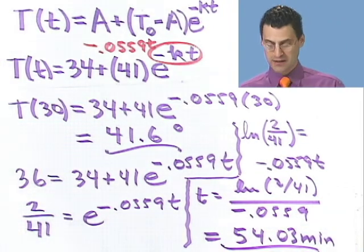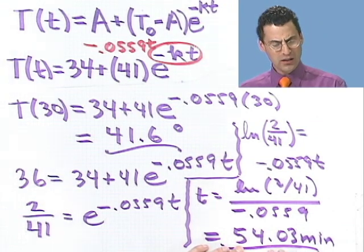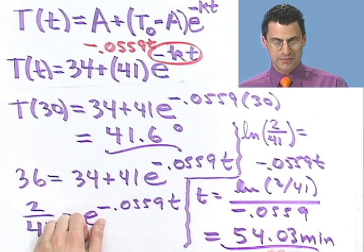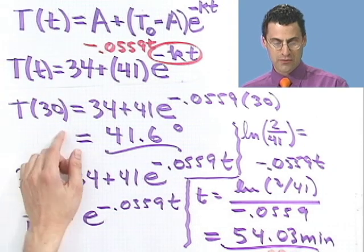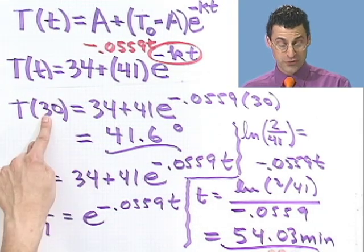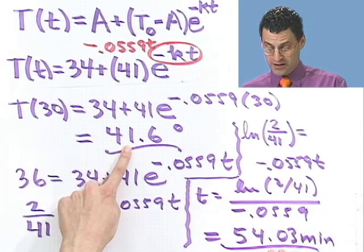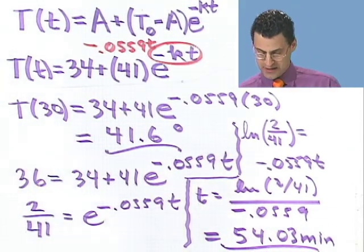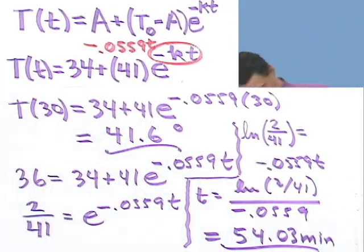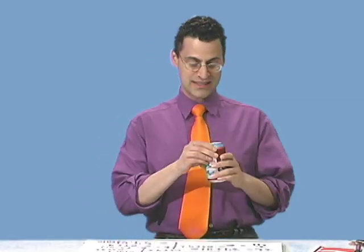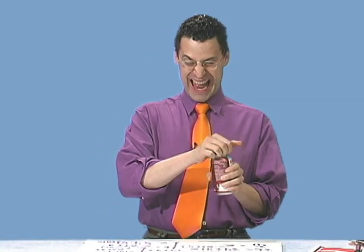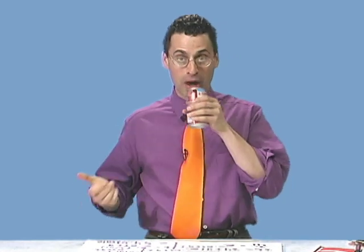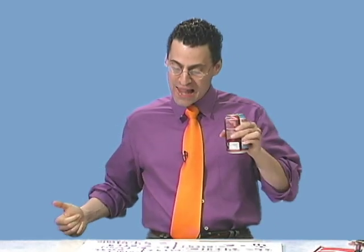And does that seem reasonable? Well, I mean, it seems at least within the realm of reason, because we knew that five minutes in, I was at 65 degrees. Thirty minutes in, I was 41 degrees. So this has to be longer than 30 minutes, and certainly that is. So in fact, what would happen is, 54 minutes later, you would open up your refrigerator, have an icy cold one, and you're all set. Oh, that's good. All right, try these and cool off.